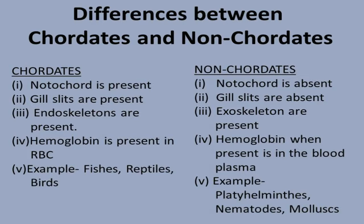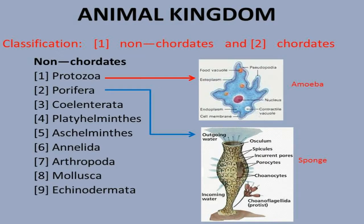Examples of non-chordates include flatworms, nematodes, mollusks, and other organisms you see in daily life — all are non-chordates. Now I will tell you about the animal kingdom classification and we will focus on non-chordates.